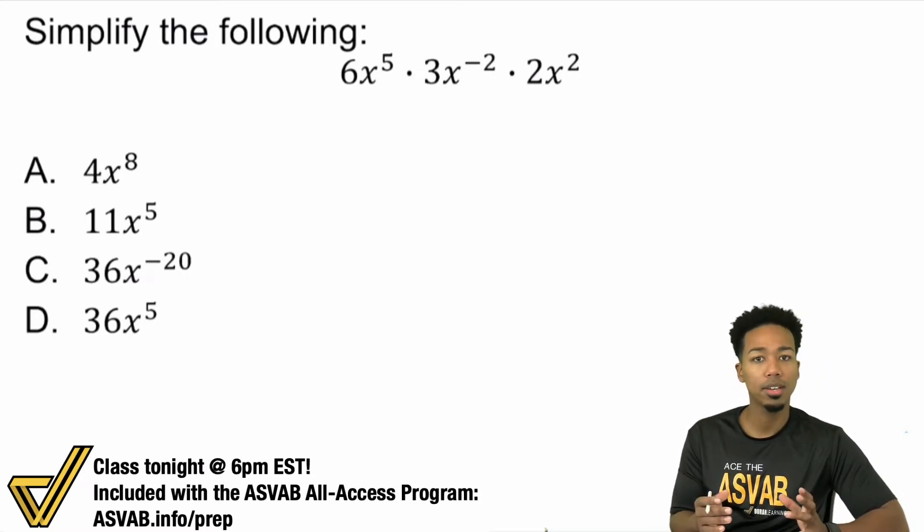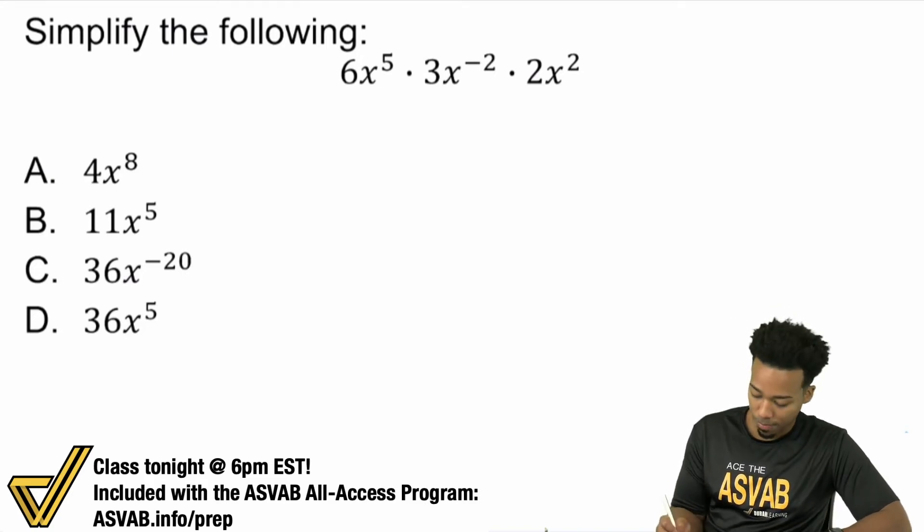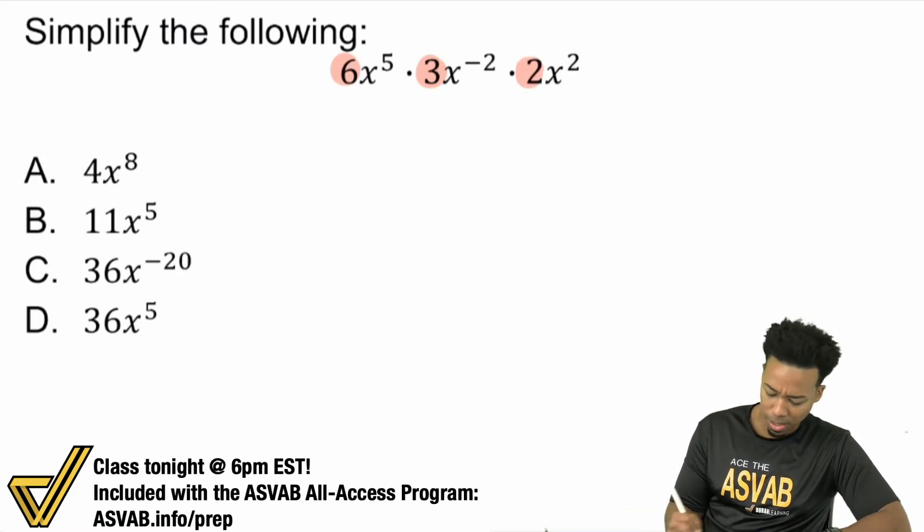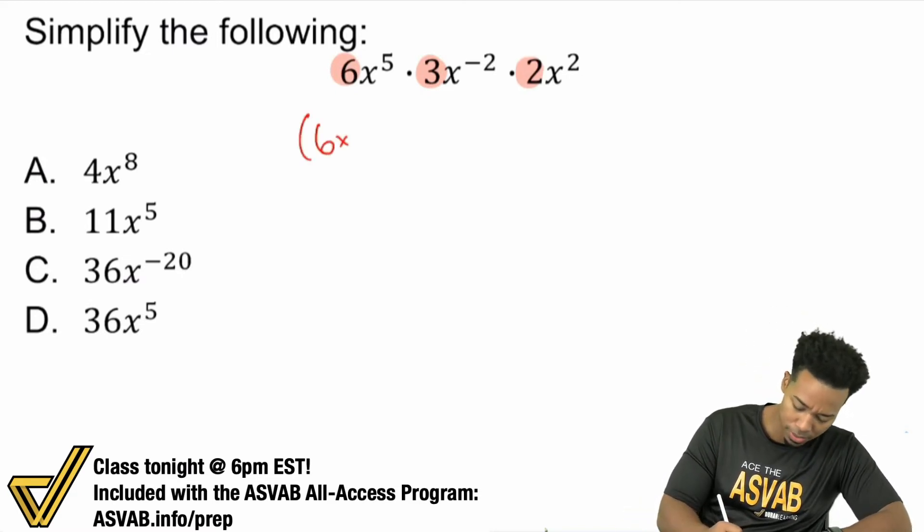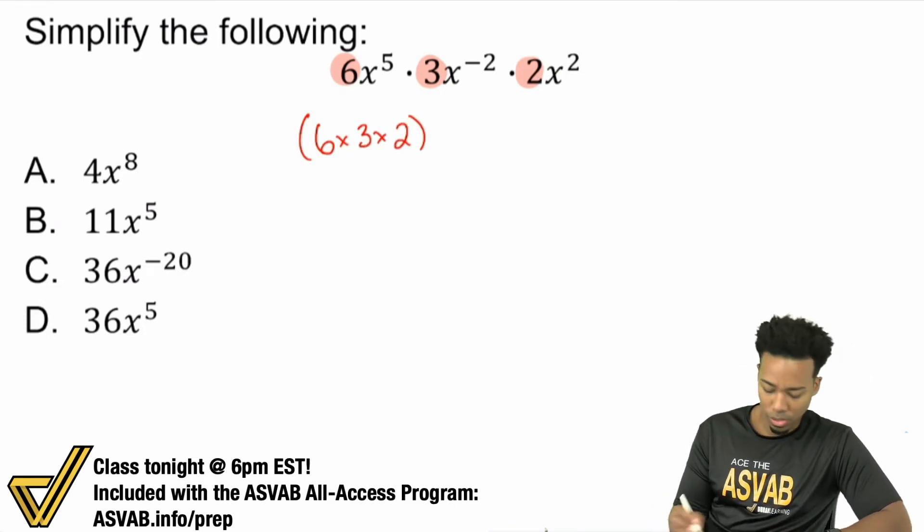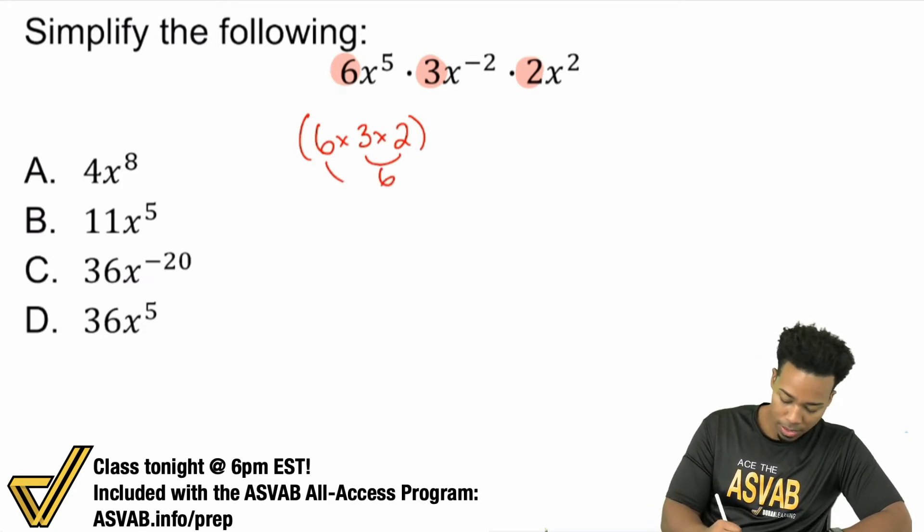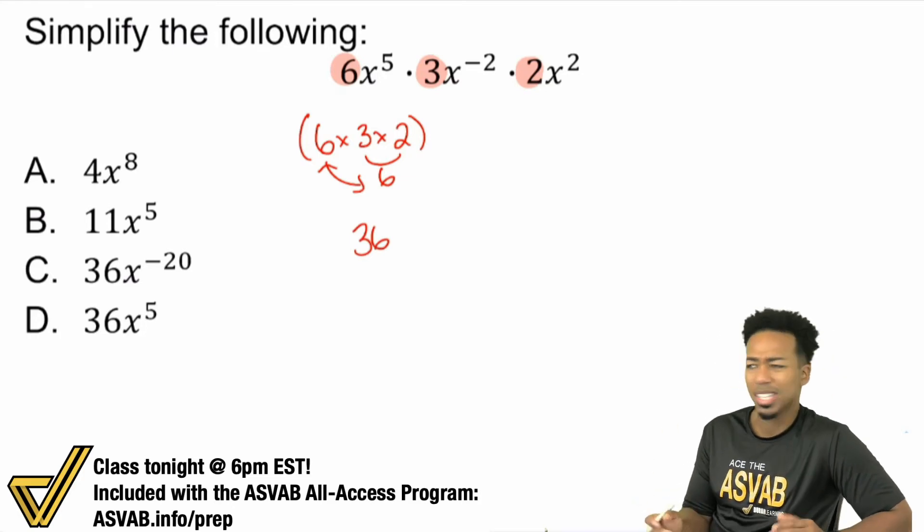This is how the law of exponents works. Whenever you're multiplying variables, if those variables are the same, you'll add those exponents. And the regular numbers out in front, you'll just multiply them as normal. So here we're going to have 6 times 3 times 2. Three times 2 is 6, and 6 times 6 is 36. That's the easy part.